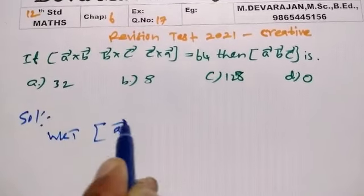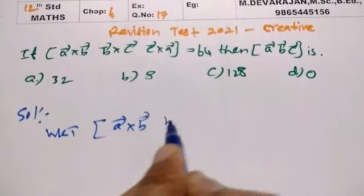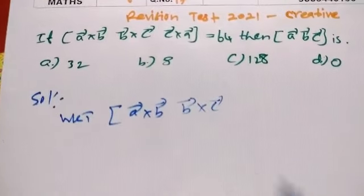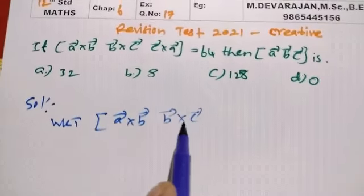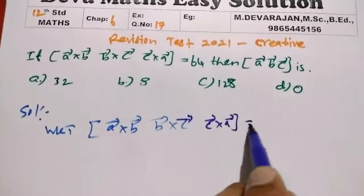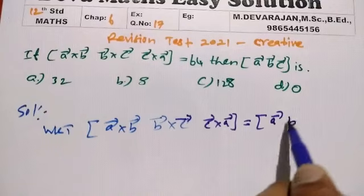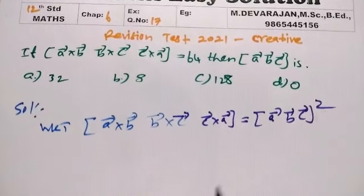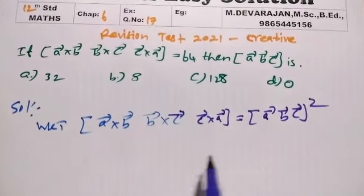We have box A cross B, B cross C, C cross A equals box A B C all squared. So that value is 64.